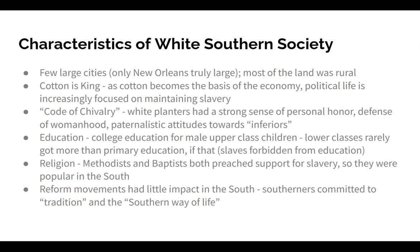In terms of religion, Methodists and Baptists — denominations that emerged from the First Great Awakening — both preached support for slavery and were very popular denominations in the South. The reform movements discussed in previous videos had very little impact in the South. Southerners were really committed to tradition and the Southern way of life, or at least the white Southern way of life.